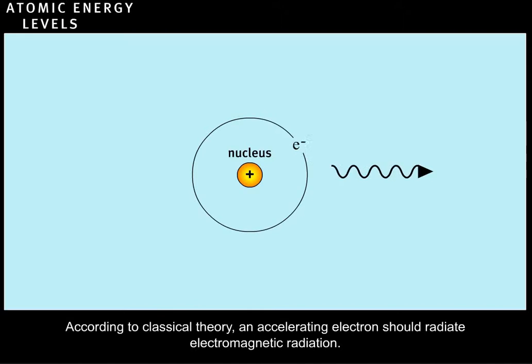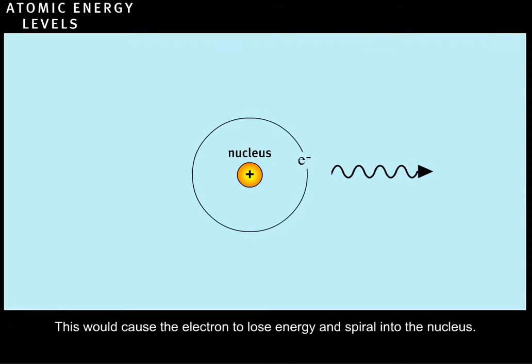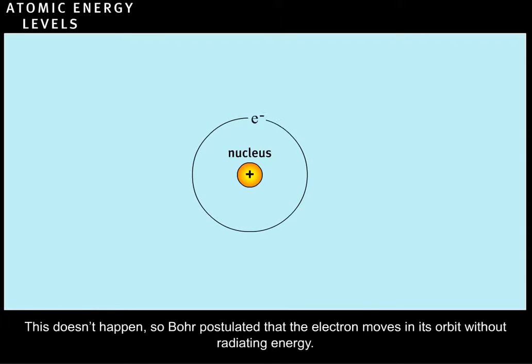According to classical theory, an accelerating electron should radiate electromagnetic radiation. This would cause the electron to lose energy and spiral into the nucleus. This doesn't happen, so Bohr postulated that the electron moves in its orbit without radiating energy.